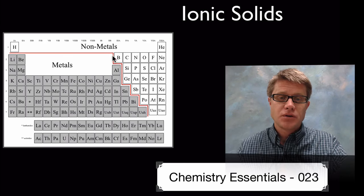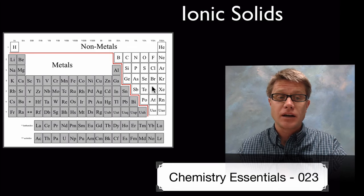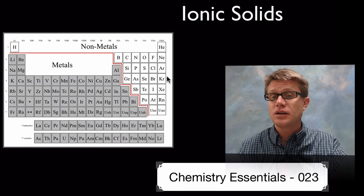On the periodic table if we draw a line like this, on the left side we have the metals and on the right side including hydrogen we have the nonmetals.